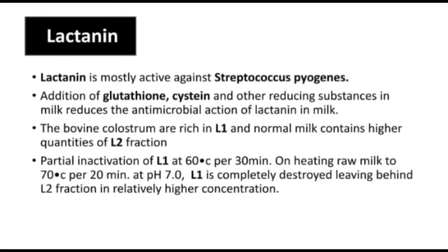Lactenin is mostly active against Streptococcus pyogenes, a gram-positive bacteria which grows in chains and causes numerous infections in humans. The reduction of the antimicrobial actions of lactenin in milk by addition of glutamine — an antioxidant present in plants, animals, fungi, and some bacteria — and other reducing substances in milk are among factors that affect growth of Streptococcus pyogenes, and can cause mastitis.